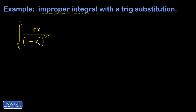I have a 1 plus something squared, raised to the 3-halves power. It would be nice if it was just a single thing raised to the 3-halves power instead. The trig substitution I'm thinking of is 1 plus tangent squared x equals secant squared x — that's a '1 plus variable squared' thing that can be collapsed into a single variable squared.